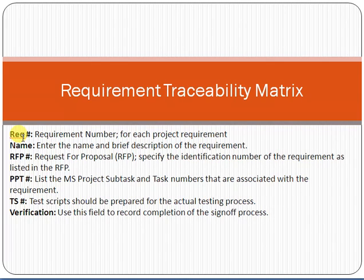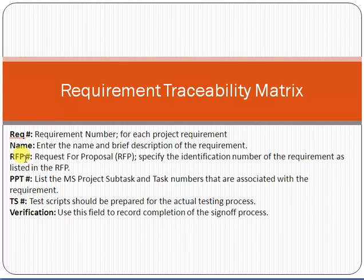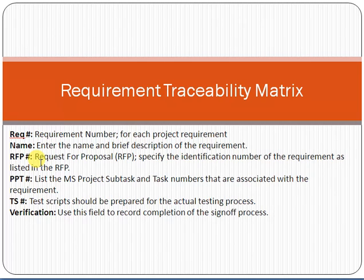The fields included in the Requirement Traceability Matrix are: Requirement Number — a unique number assigned to each requirement; Name — every requirement has a name; and Description — a description of the requirement. Then there is the RFP Number. RFP stands for Request for Proposal. Whenever a project is signed, an RFP is floated, and the RFP reference number is mentioned here. For example, if a requirement was mentioned in the RFP as section 2.2, you write 2.2 in the RTM.